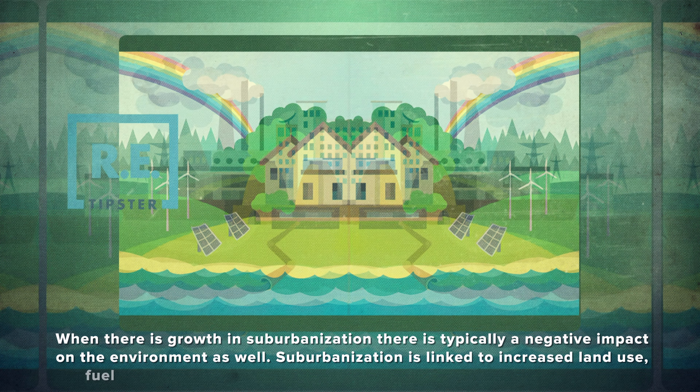The Fair Housing Act of 1968 prohibited discrimination based on race, color, religion, sex, and national origin. But racial segregation persisted for decades in the suburbs, despite the Fair Housing Act.